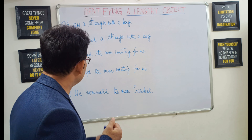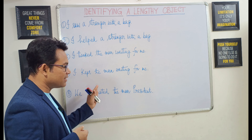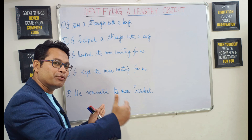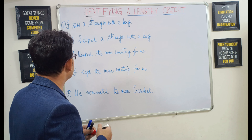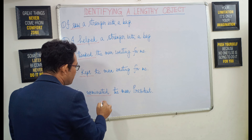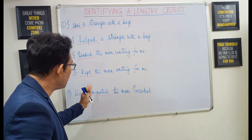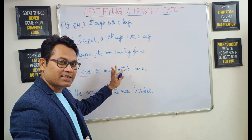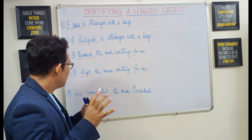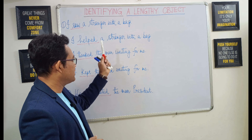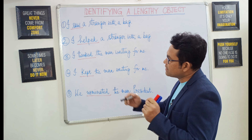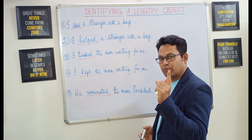We have got five sentences here and all the sentences have transitive verbs — that means verbs with objects. The verbs are: saw, helped, thanked, kept, and nominated. That means after these verbs we will be getting the object. The most important question that should come to our mind is whether or not the remaining parts of the sentences are the objects in all five cases. Let's consider all five examples one by one.